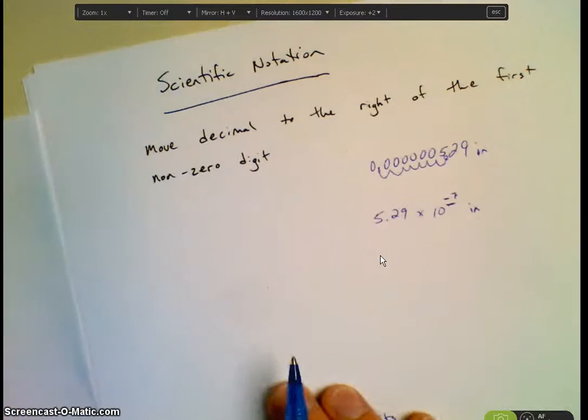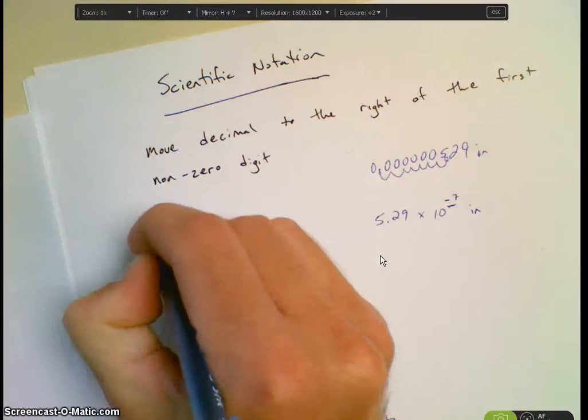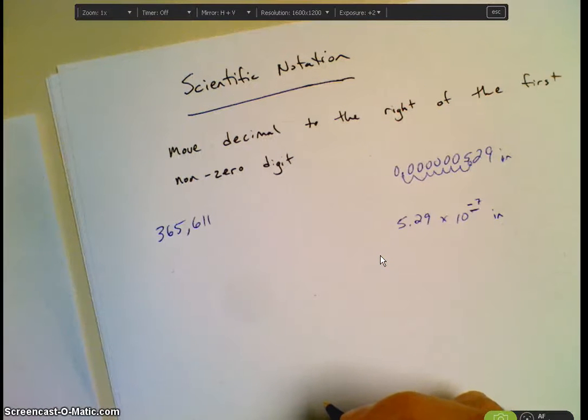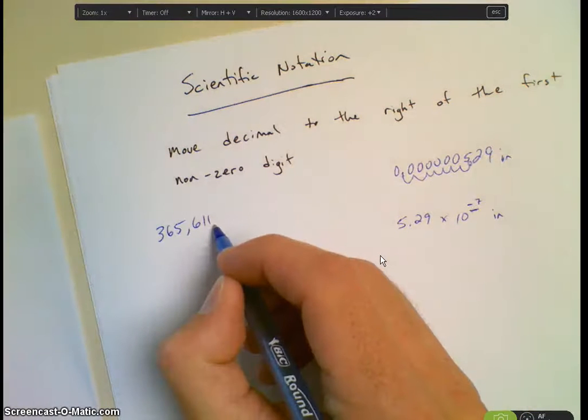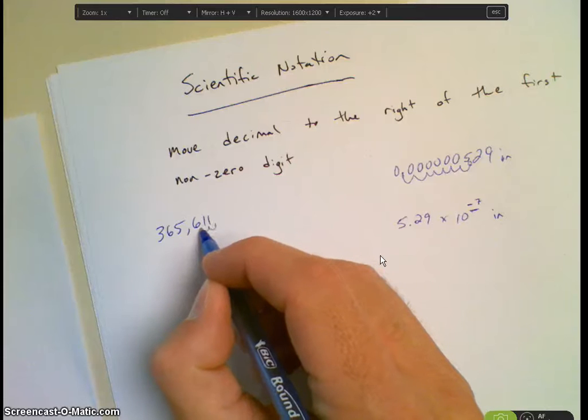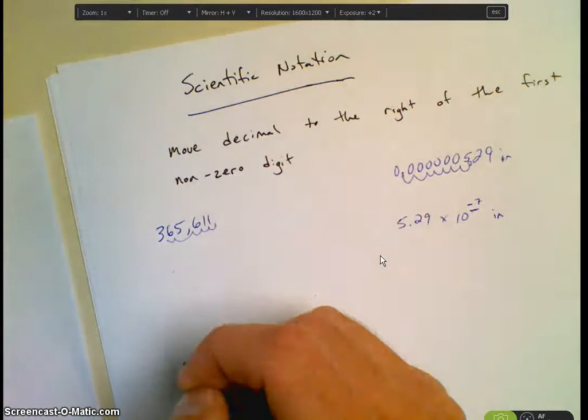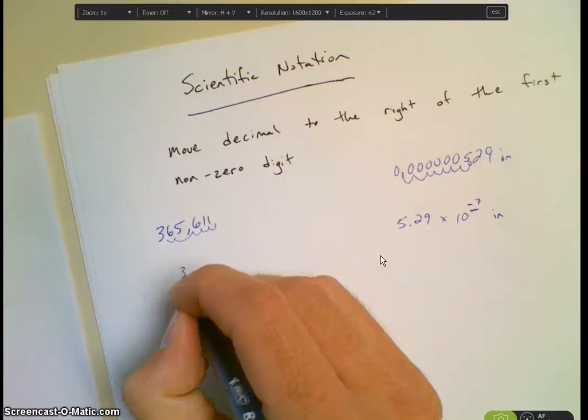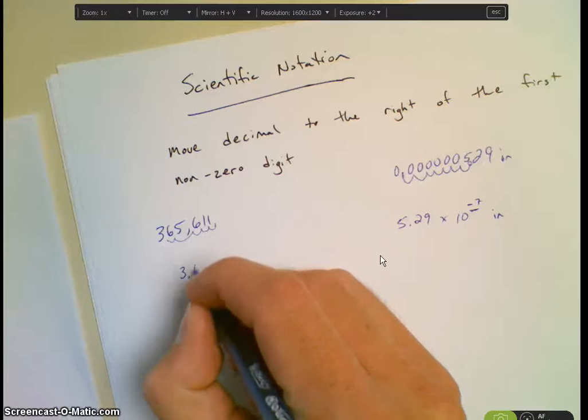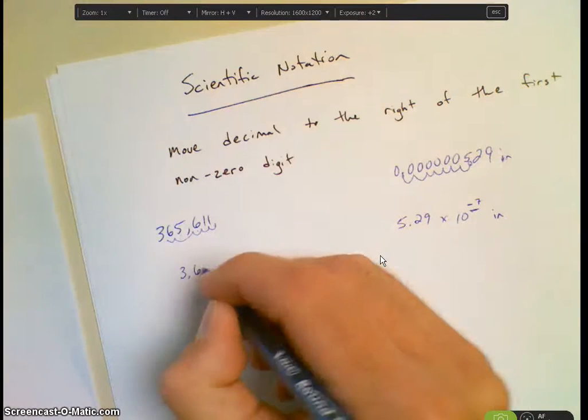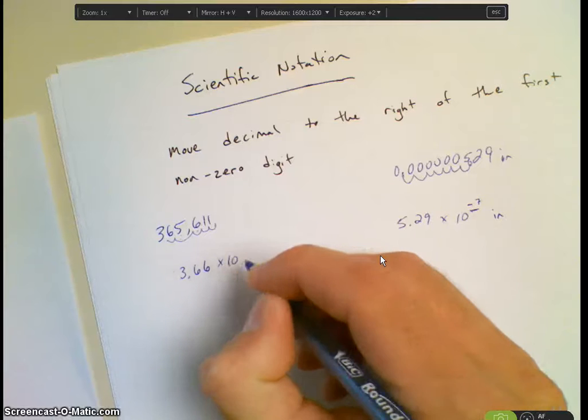So the first one there is 365,611. And what do the instructions say in the notes? It says to write the proper scientific notation to three significant digits. Okay. So if we're moving the decimal point, the decimal is out here. We're going to move it 1, 2, 3, 4, 5 spots. So what number are we going to record on our paper? 3.6. And then this is a 5, but there's a 6 after it, so we have to round up. So 3.66 times 10 to the 5th.